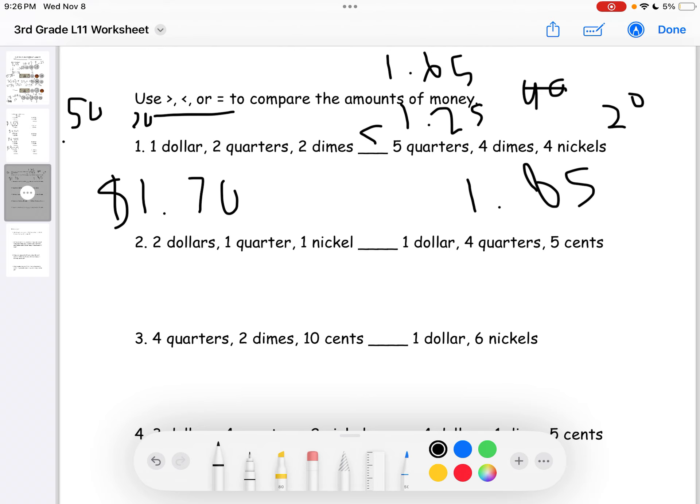And we'll do one last question on this page. Number 2. So, we have $2 and 1 quarter 1 nickel. So, it'll be $2.30 on the left side. On the right side we have $2.05. This is $1 and since 4 quarters equals $1.00. And there's another dollar which is $2.00, plus the $0.05. So, the left side is bigger.